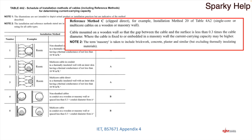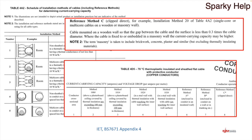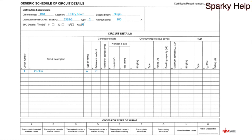You can find them from other locations as well. Just before those tables you've got descriptions — for example, reference method C, clip direct, means the cable is mounted on wood walls with a gap less than 0.3 times, clipped directly to it. Also within appendix 4 you've got the current carrying capacities of whatever cable you've already identified. Looking along the top you can see columns 1 to 8 with methods of installation. For twin and earth cable you've got methods 100, 101, 102, 103, and then method A, B, and C which is clip direct. So I'm going to put type C as the reference method.